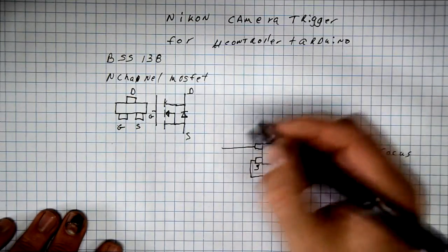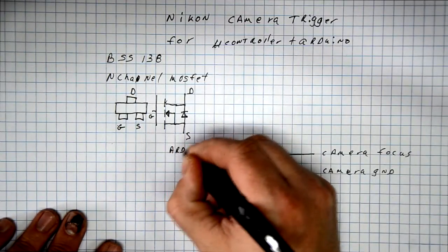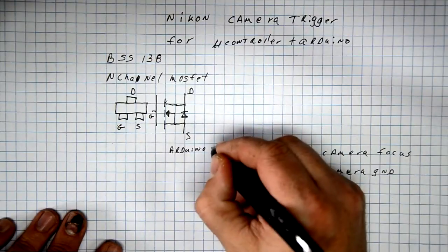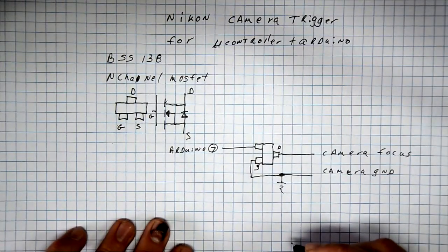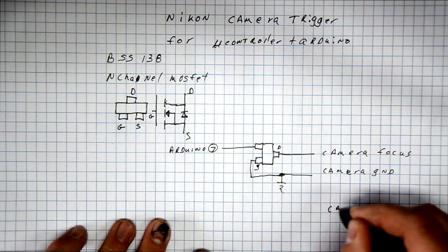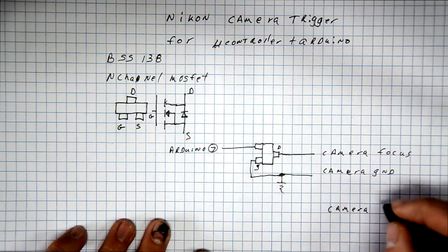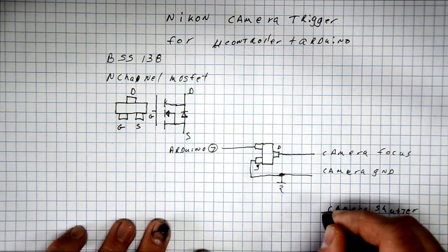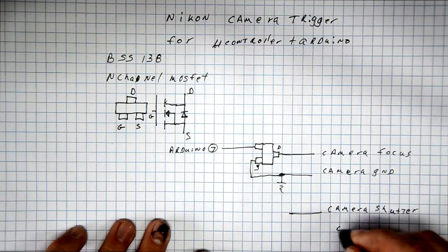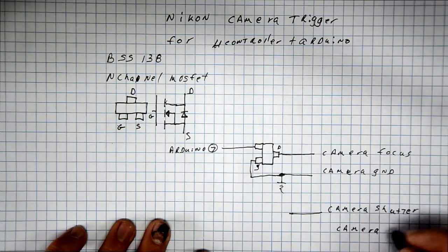The ground is the white wire from the camera cable, and I've chosen the gate to go to Arduino pin 7. This was just because I had those pins free for my projects, so you can choose any pins that you want.